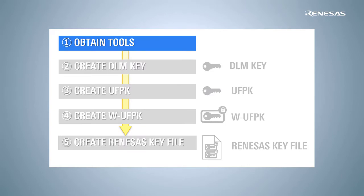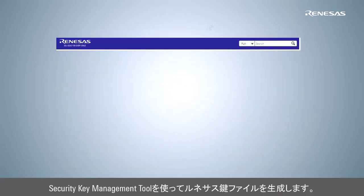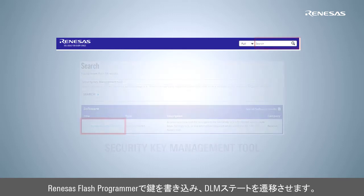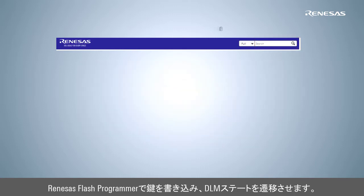First, download the Security Key Management tool from the Renesas Electronics website. We will use this tool to create the key files needed for key installation. Next, download the Renesas Flash Programmer. We will use this tool to securely install the DLM key and to change the DLM state.